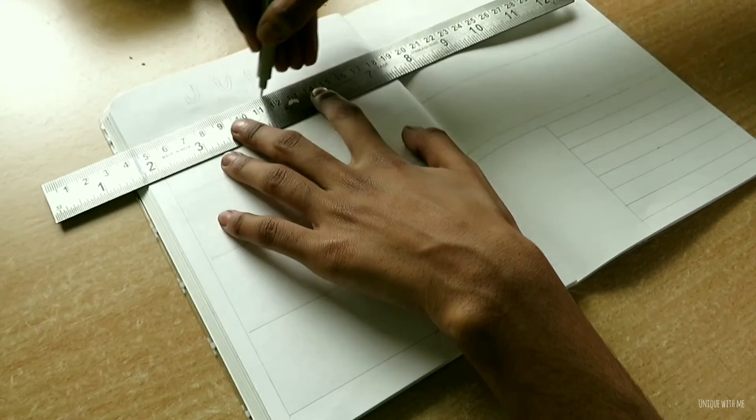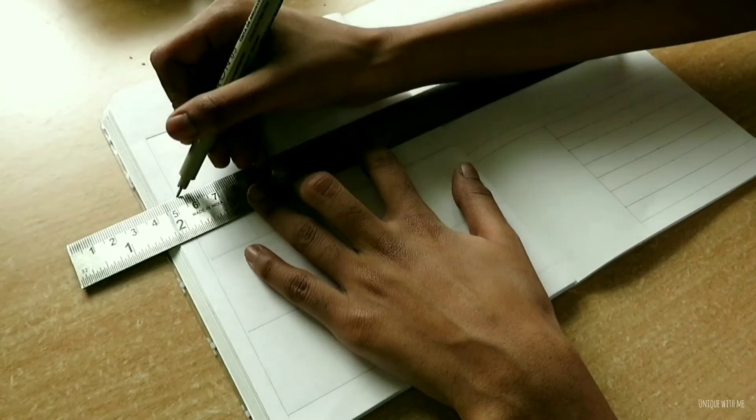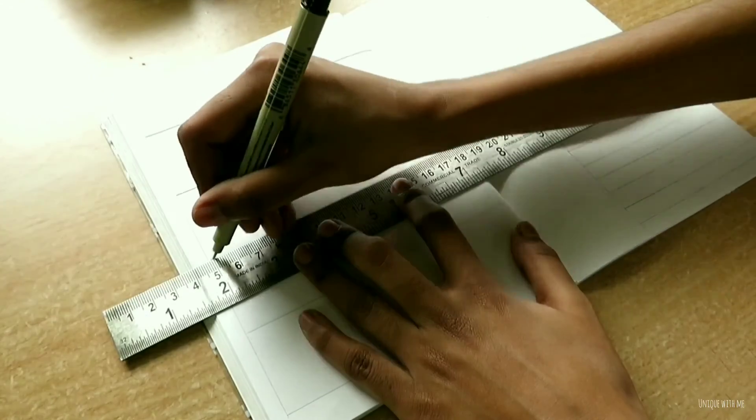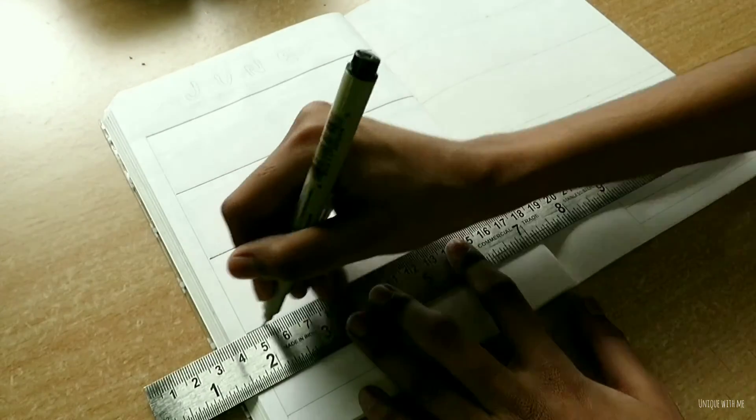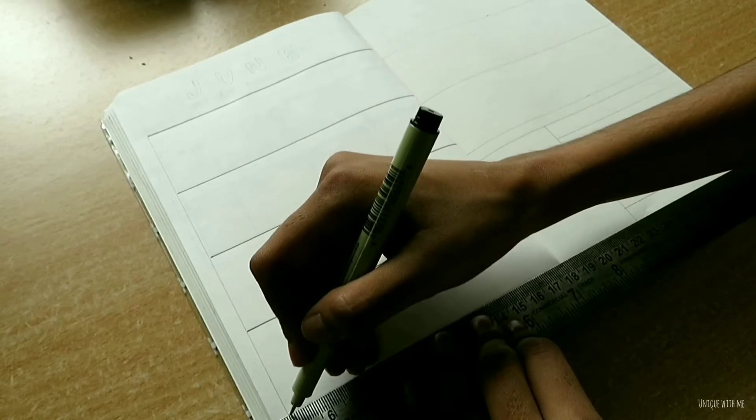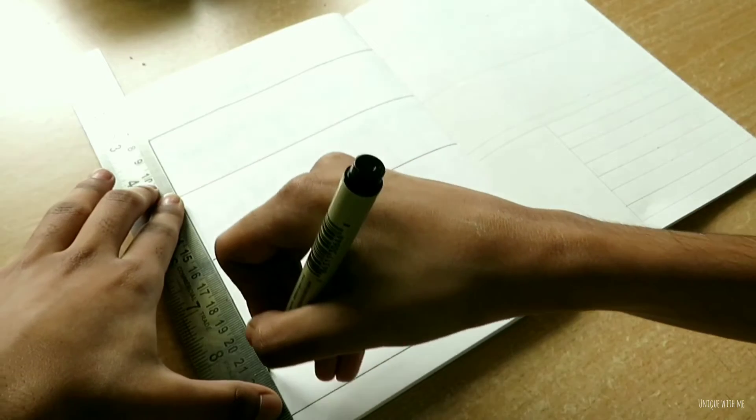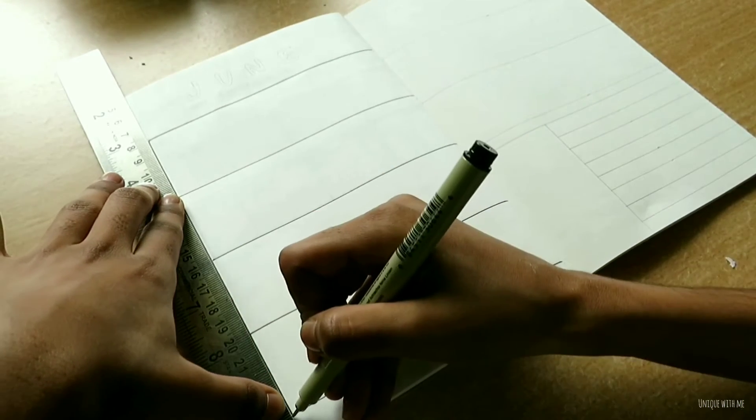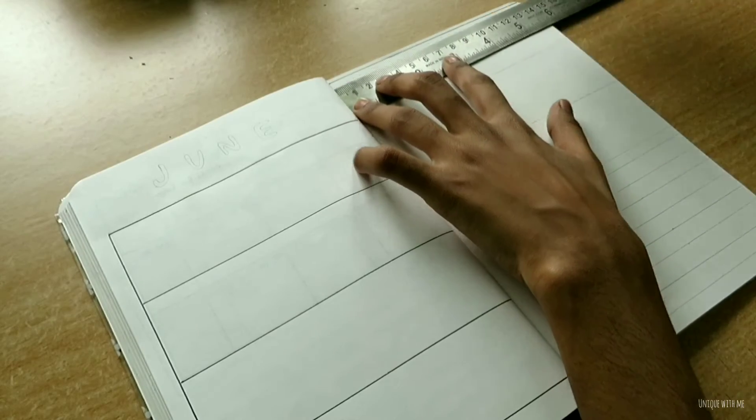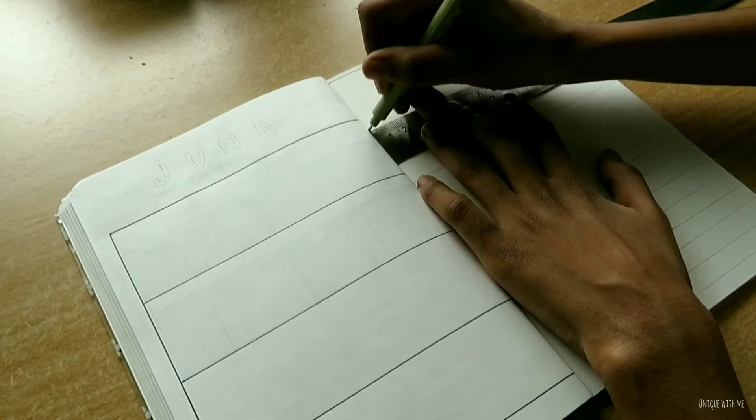This month I did a really simple bullet journal. It is perfect for someone who's busy but wants to be organized. This month I didn't do a calendar because I don't use calendars. I only did a weekly spread so that I can know when I have to submit the assignments and homework that are given to me by my school.